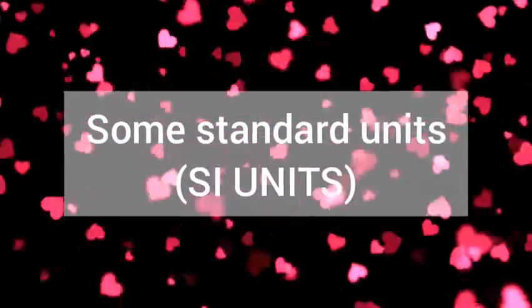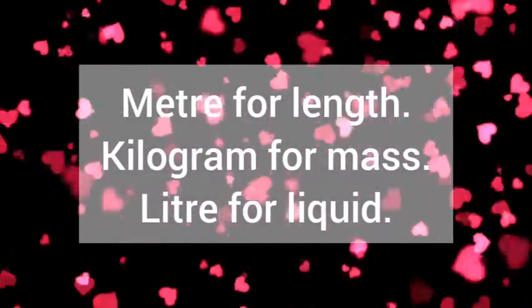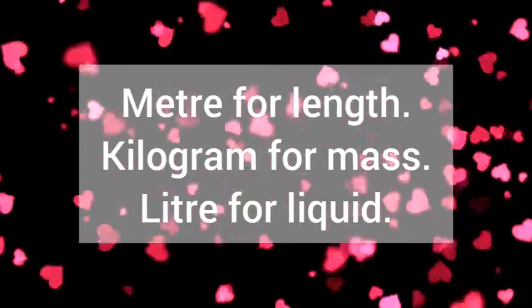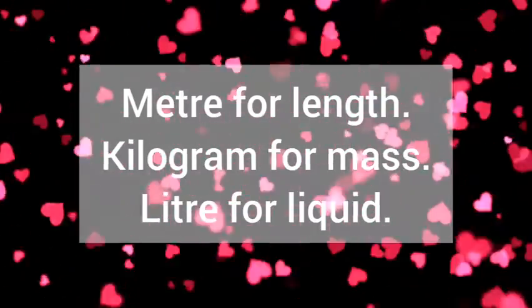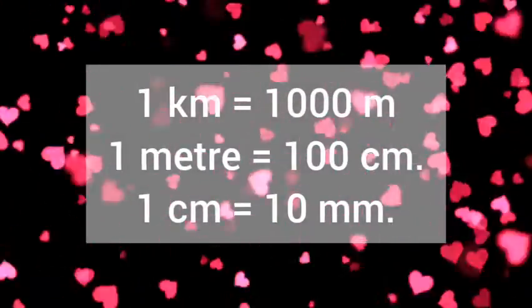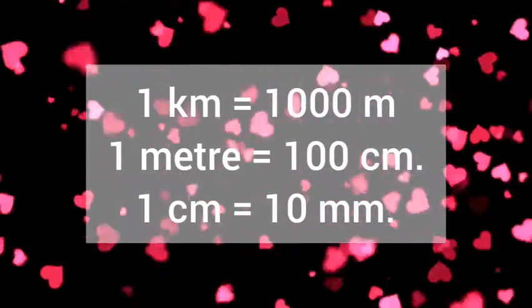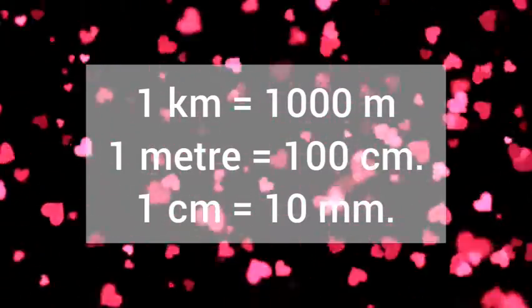Some standard units or SI units now shall we discuss. Meter for length, kilogram for mass, and liter for liquid. These are the SI units. 1 kilometer equals 1000 meters. 1 meter equals 100 centimeters. 1 centimeter equals 10 millimeters.